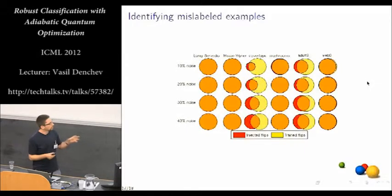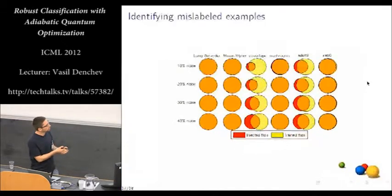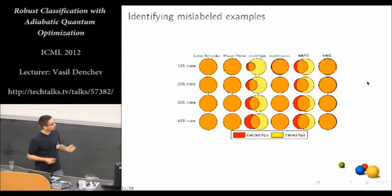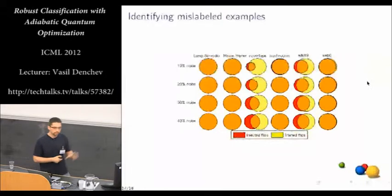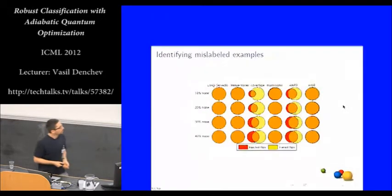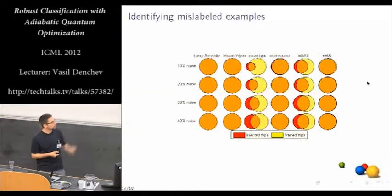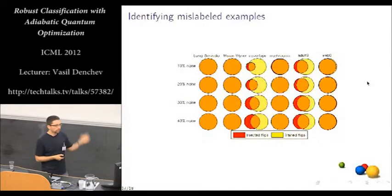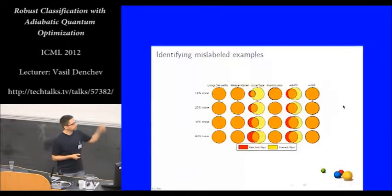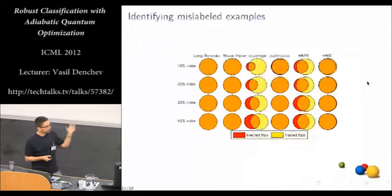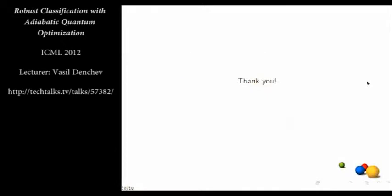So then we wanted to see how these two sets overlap. The orange color here shows full overlap. And that means all of the injected flips were also identified by training as wrong labels. And the only non-perfect overlaps here we have for these two data sets, cover type and adult nine. And the reason for that is those data sets have very high base error. And probably the optimization problems there are much harder than in the other data sets. But applying the quantum hardware would probably give better results there too. Thank you very much.